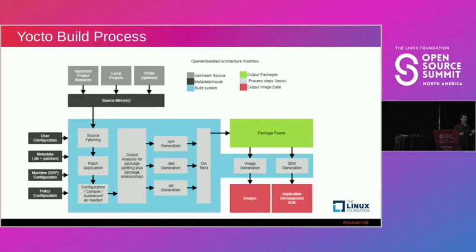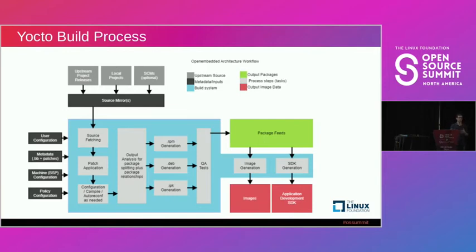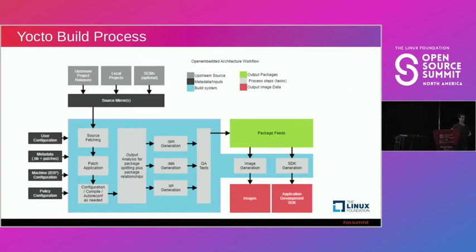BitBake first pulls all the source down for your applications and third-party applications, does whatever patching operations may need to happen, then cross-compiles all of your applications. You can change which target you're cross-compiling for by passing in a different machine configuration file and switching by changing a Yocto environment variable to cross-compile for several different targets. It generates packages, then generates your root file system and a flashable image. If you want an update mechanism for over-the-air updates, you can also generate a bundle to upgrade systems.